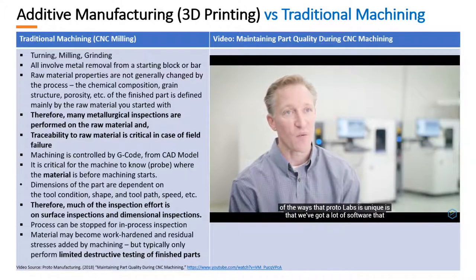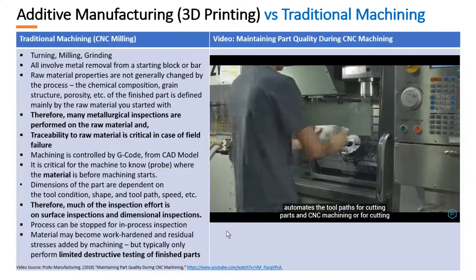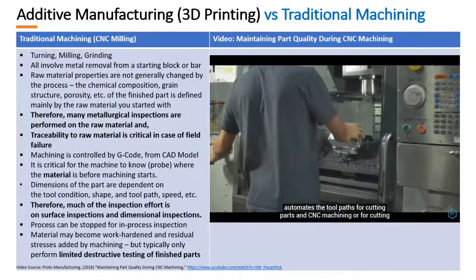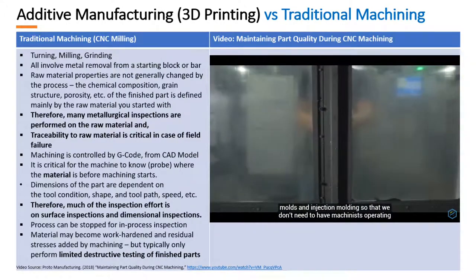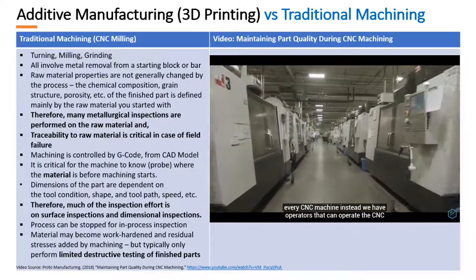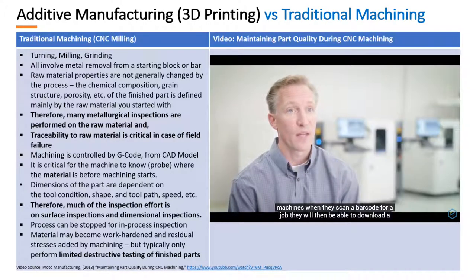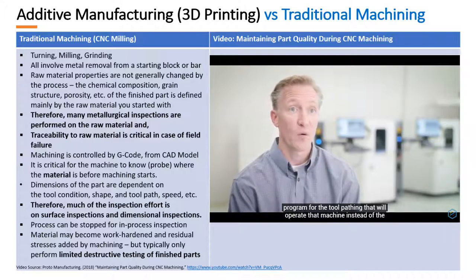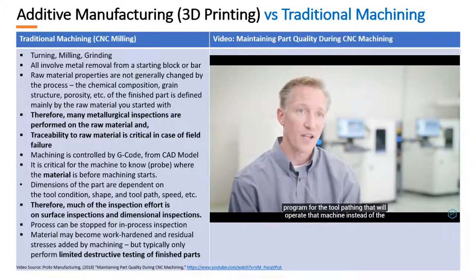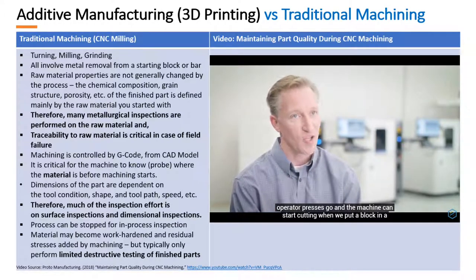One of the ways Protolabs is unique is that they have software automating the toolpaths for cutting parts in CNC machining or cutting molds in injection molding, so they don't need machinists operating every CNC machine. Instead, they have operators who, when they scan a barcode for a job, can download a pre-made program for the toolpathing. It's all automated and downloaded — the operator presses go and the machine starts cutting.